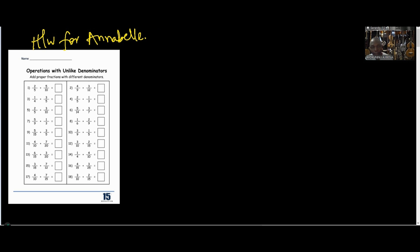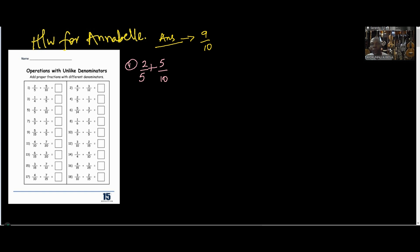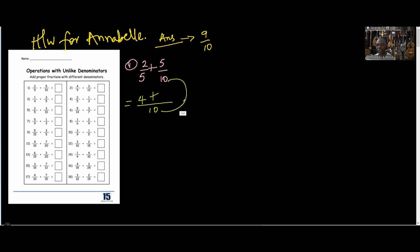You said you were able to do the first one — your answer is nine over ten. Let's check it together. Number 1 says two over five plus five over ten. We look for the smallest number that five and ten can divide — that is ten. Five divides ten two times: two times two gives us four. Ten divides ten one time: one times five gives us five. We get nine over ten, which makes your answer correct.